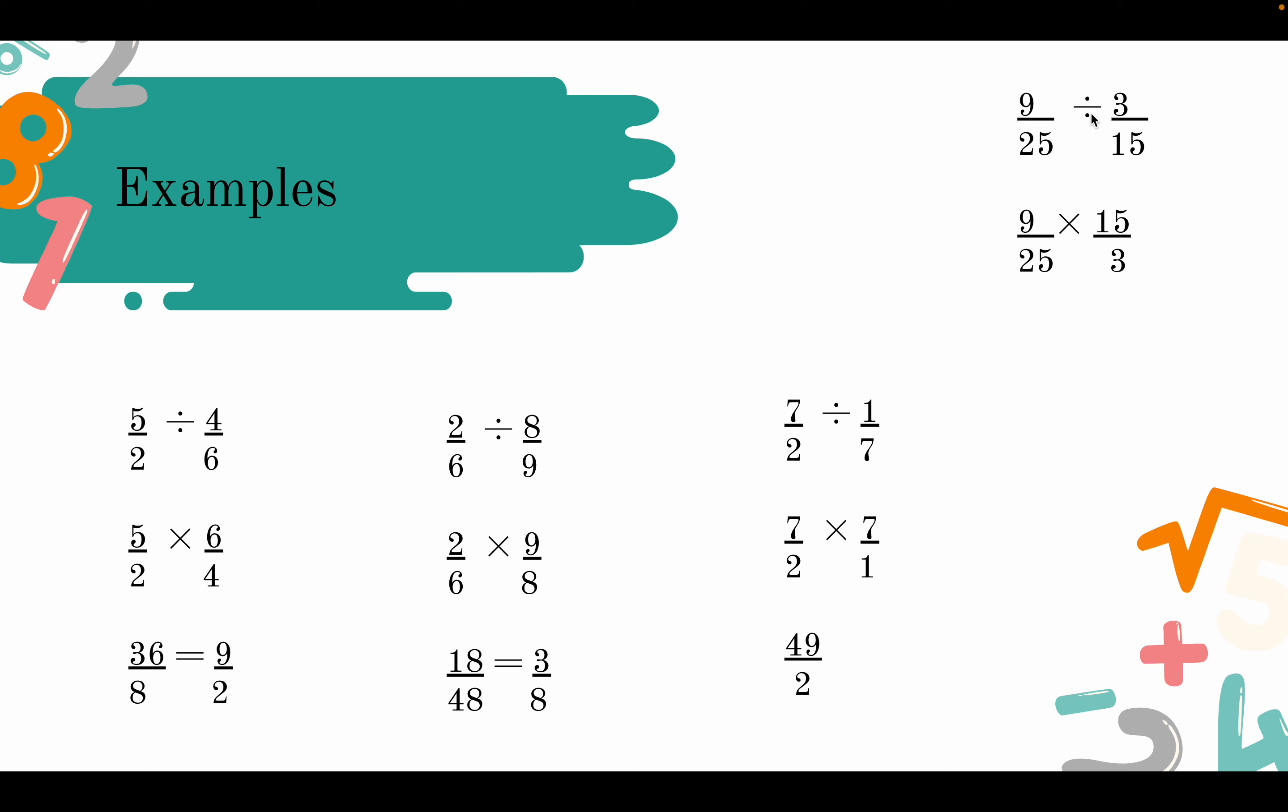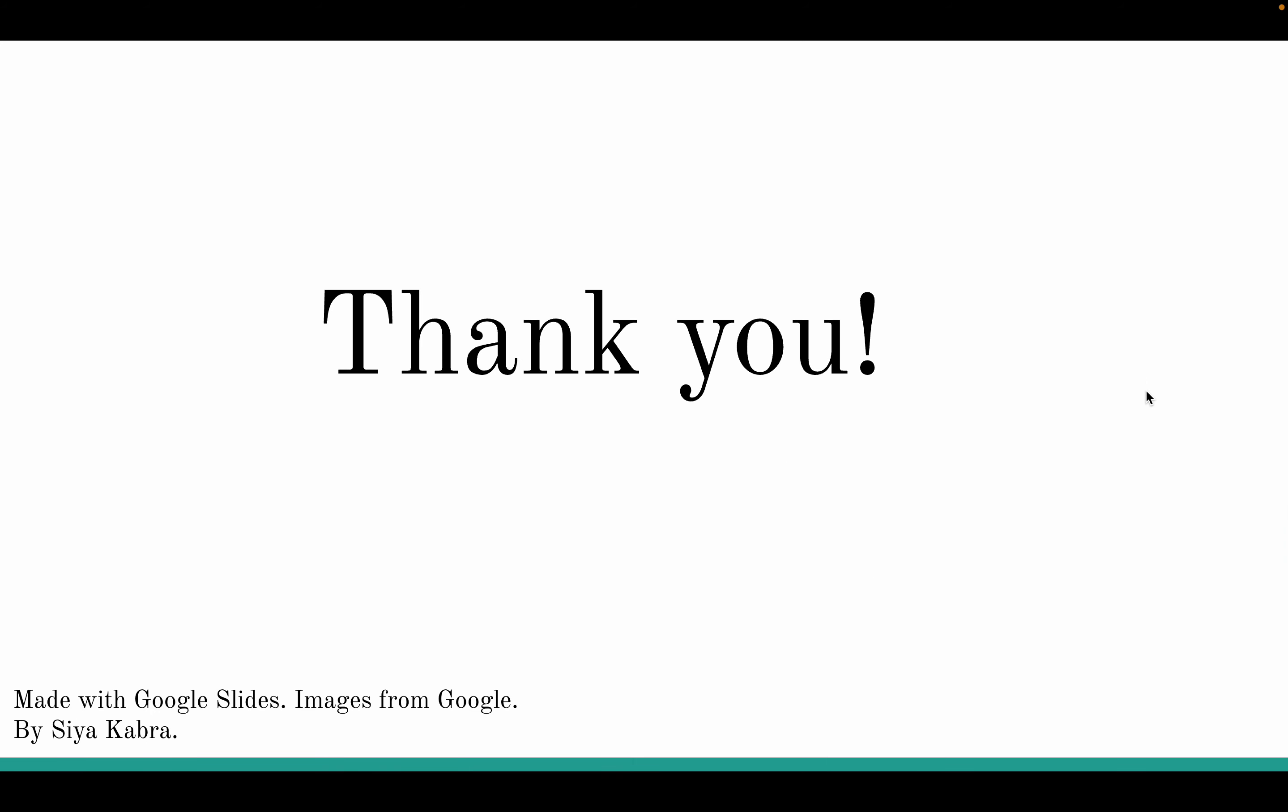Lastly, we have 9 over 25 divided by 3 over 15. We can do 9 over 25 times 15 over 3 because we keep, change, and flip. And at the end, we get 135 over 75 is equal to 9 over 5. Thank you for watching.